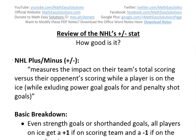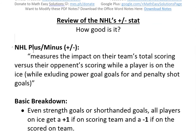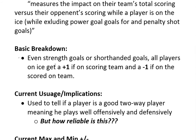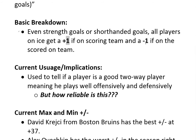Before I get to the recap, I have a plus-minus definition from Wikipedia. It says it measures the impact on their team's total scoring versus their opponent's total scoring while a player is on the ice, while excluding power play goals for and penalty shot goals. A basic breakdown means if it's even-strength goals or shorthanded goals, all players on ice get a plus-one if on the scoring team and a minus-one if on the team scored against.